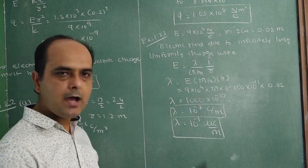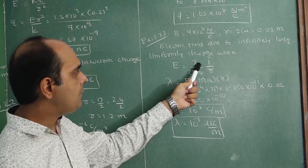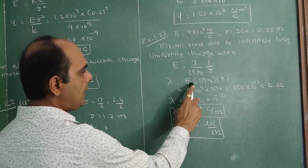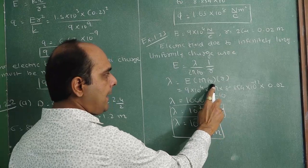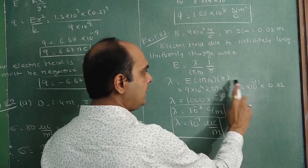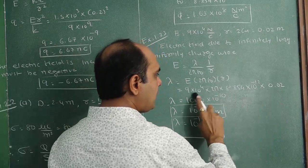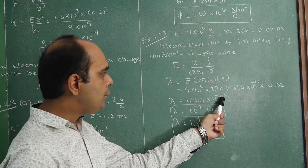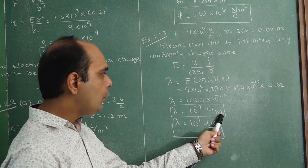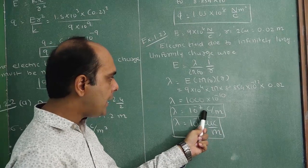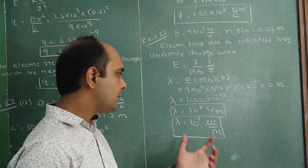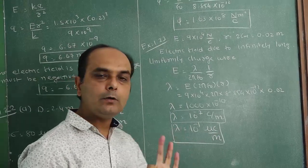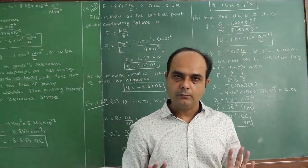Only one equation is used — make lambda the subject. E is given as 9 into 10 to the 4 Newton per coulomb; distance r is 2 cm, converting to 0.02 meter. The electric field due to an infinitely long uniformly charged wire is E = lambda by 2 pi epsilon 0 r. Making lambda the subject: lambda = E times 2 pi epsilon 0 times r. Substituting values — E is 9 into 10 to the 4, epsilon 0 is 8.854 into 10 to the minus 12, r is 0.02 — the answer becomes 10 to the minus 7 coulomb per meter, or equivalently 10 to the 1 microcoulomb per meter.